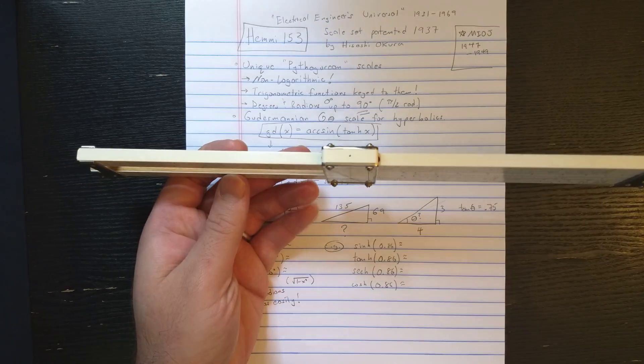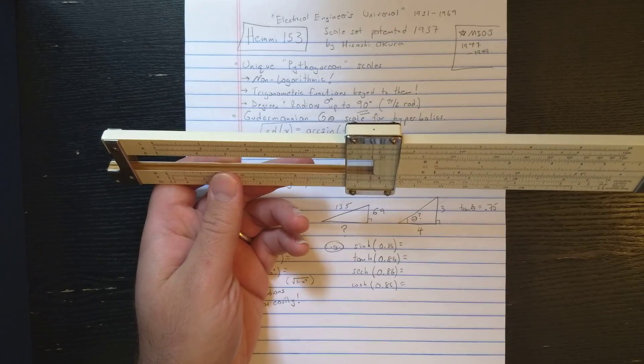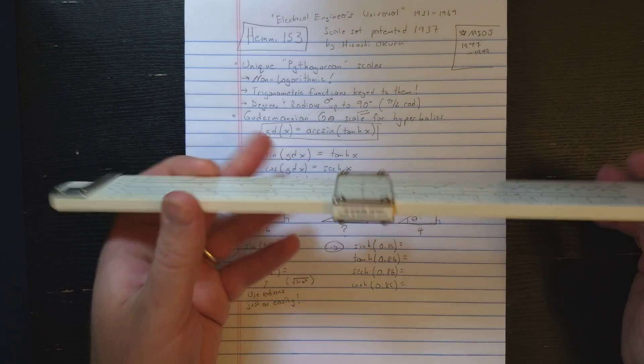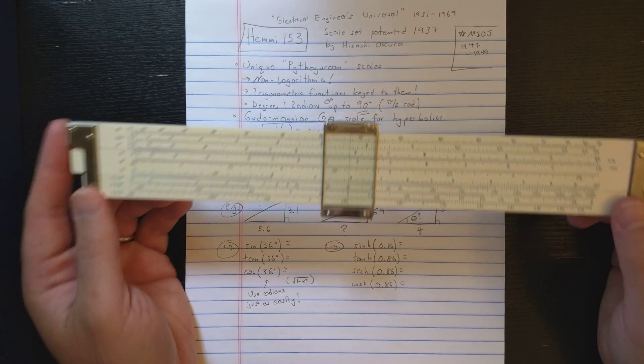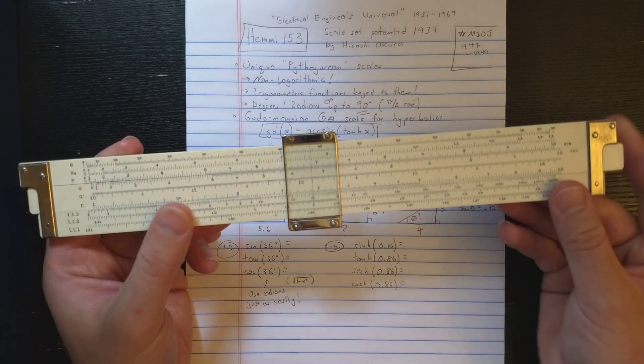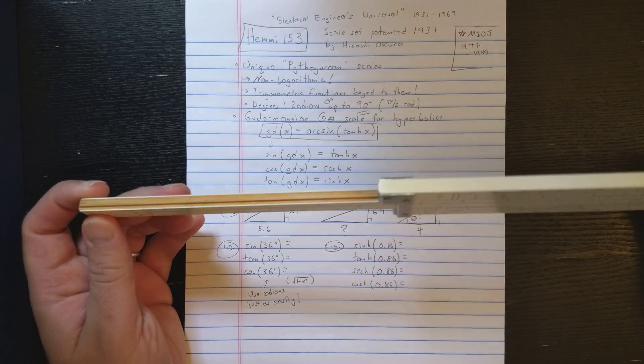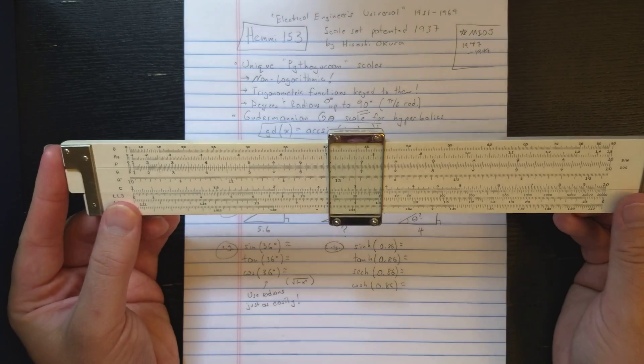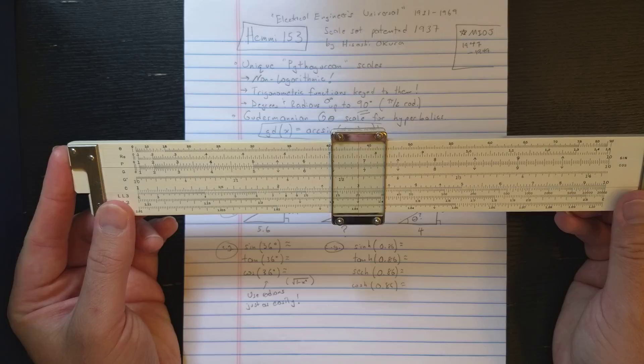Okay, besides the strange scale set, it's the standard hemi-construction bamboo, celluloid facing, adjustable, nice, although this slide roll is older, so the bamboo is starting to deteriorate. It doesn't slide as nice as it probably would have when it was new.